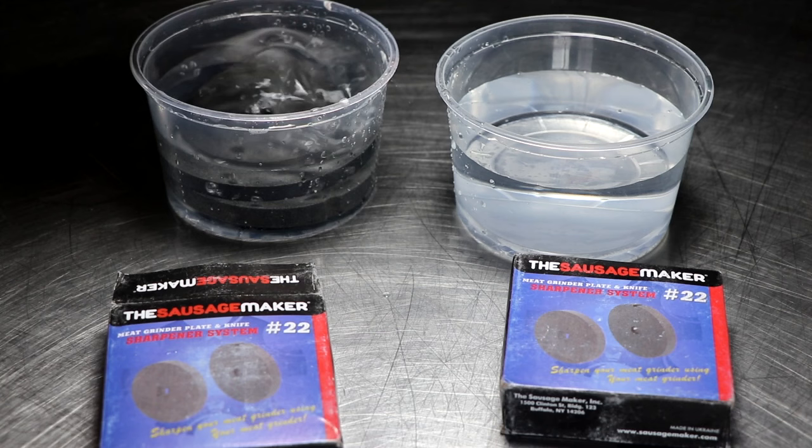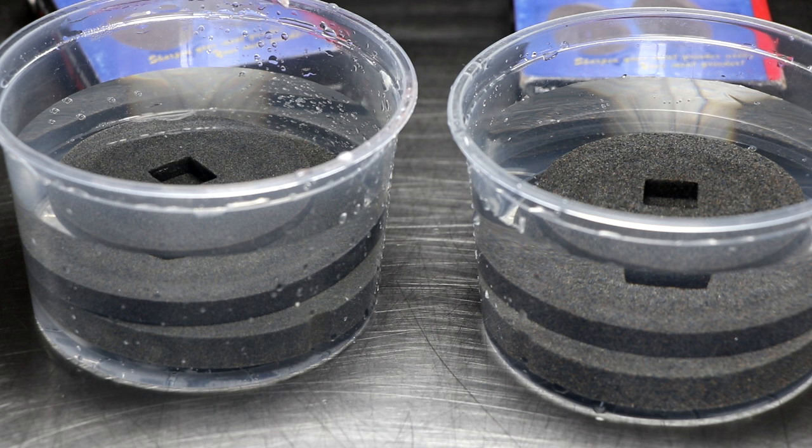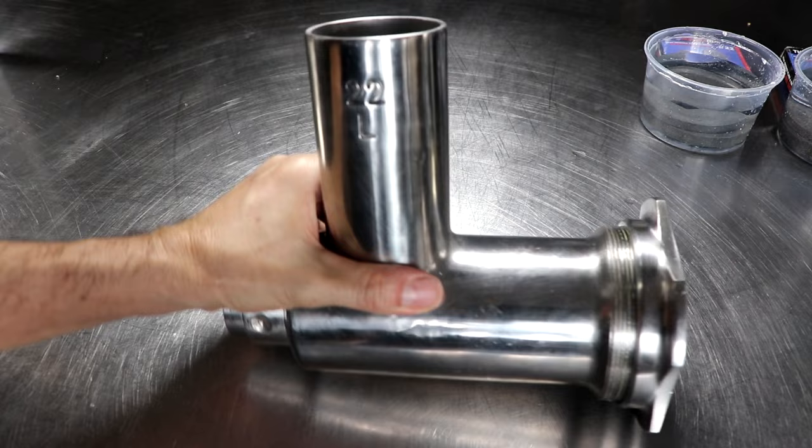Currently there's only one meat grinder sharpening system available for your knife and your plate and it's made by the sausage maker. I'm going to put a link in the description box below of where you can check that out, but let's go ahead and get into it so you can see how to use it.